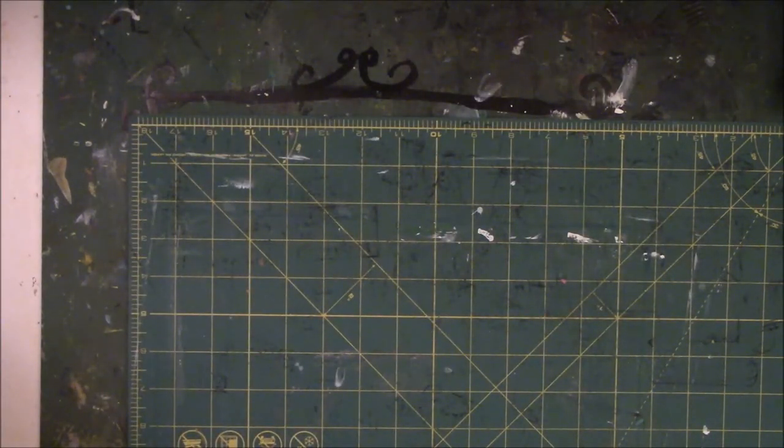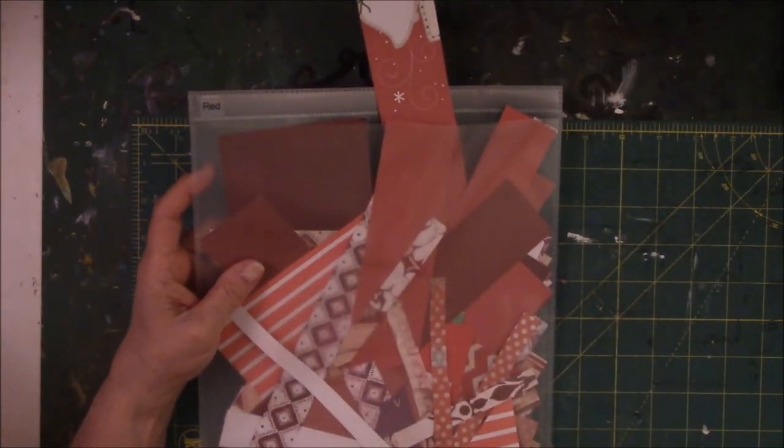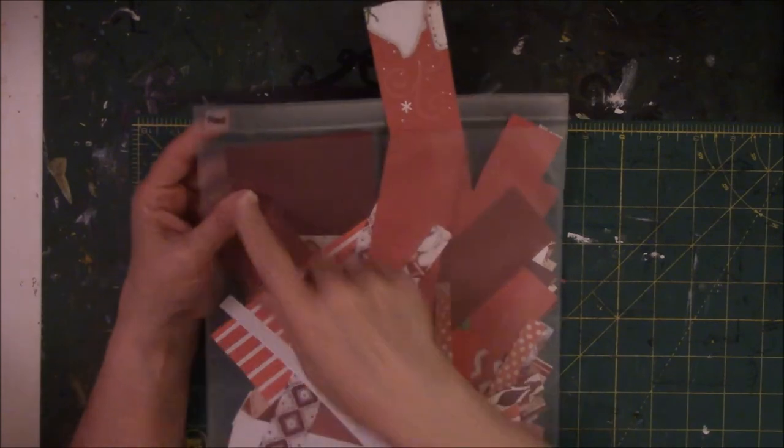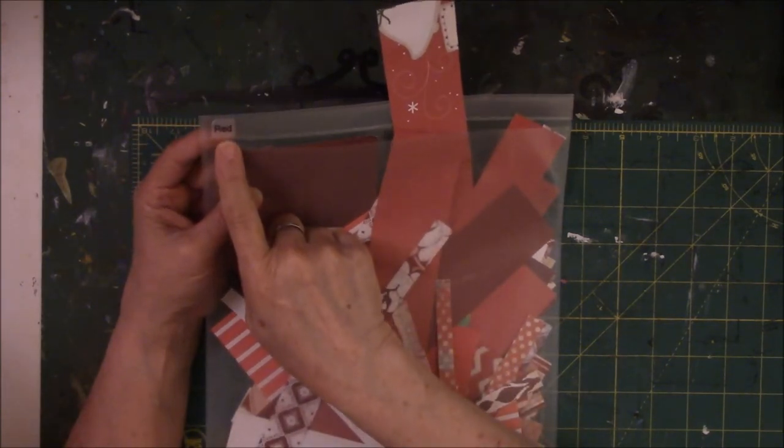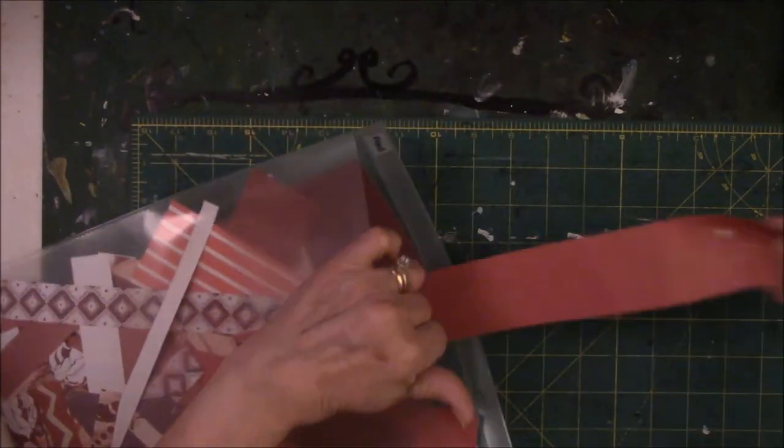And then I thought, well, if that works for that, so I'm going to take out all of my scrapbook paper scraps and card stock scraps, and I'm going to do the same thing for those. So that's what I did. I took all the scraps out of those accordion holders, file holders, labeled these and then put all my scrapbook scraps in here.